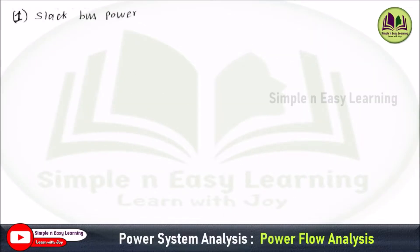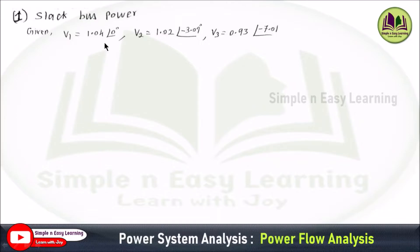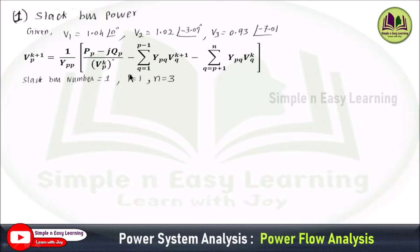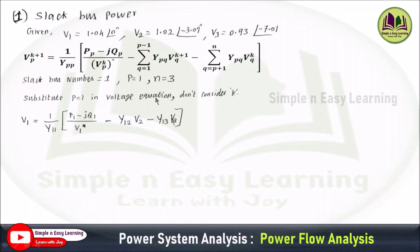Now we determine the slack bus power. The required bus voltage values are: V1 = 1.04∠0°, V2 = 1.02∠−3.09°, V3 = 0.93∠−7.01°. Since bus 1 is the slack bus, we substitute p = 1 and n = 3 in the voltage equation. We are not doing iterations, so we write: V1 = (1/Y11) × [(P1 − jQ1)/V1* − summation terms].